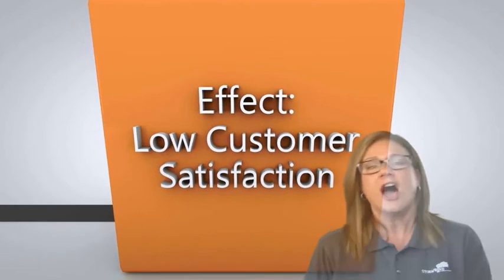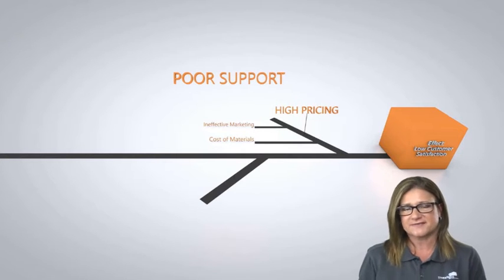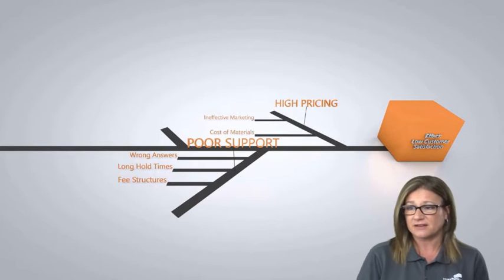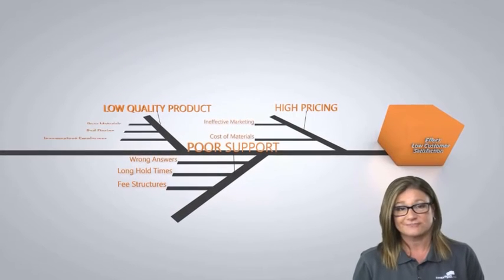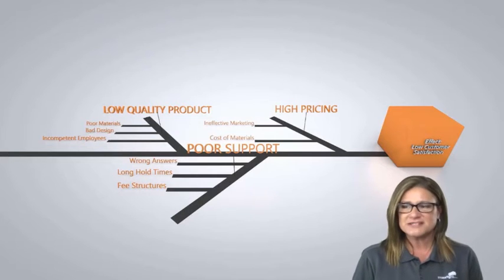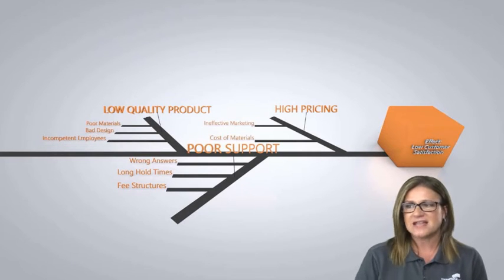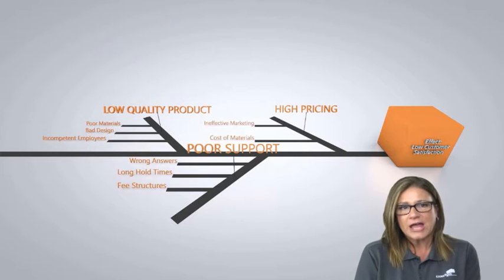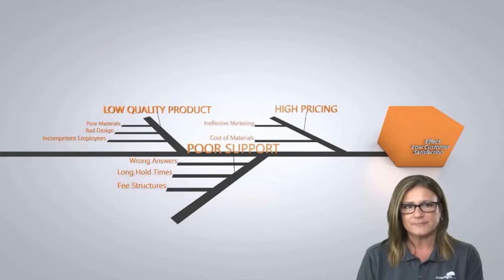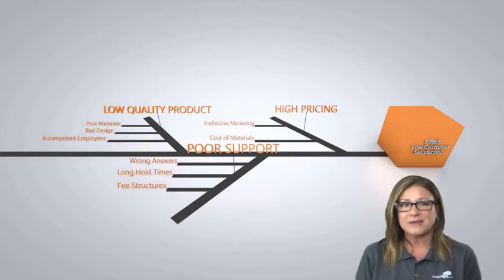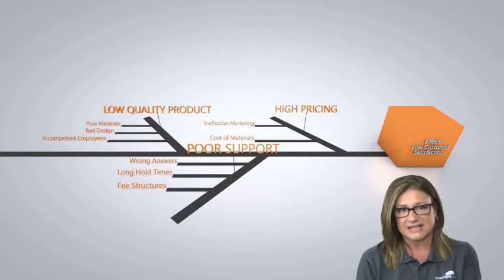Here's a basic animation of a fishbone diagram working backward through a problem. The effect could be low customer satisfaction. One category might be high pricing — with sub-causes like ineffective marketing or cost of materials. Another could be poor support from people — wrong answers, long hold times. Maybe fee structures. Or a low-quality product — poor materials, bad design, incompetent employees. We start with the big effect: customer satisfaction rates are down. That's a risk, and we work backward to figure out how to fix it through corrective action.